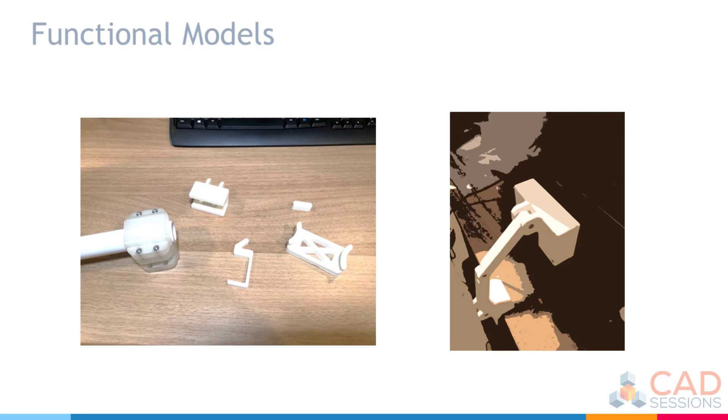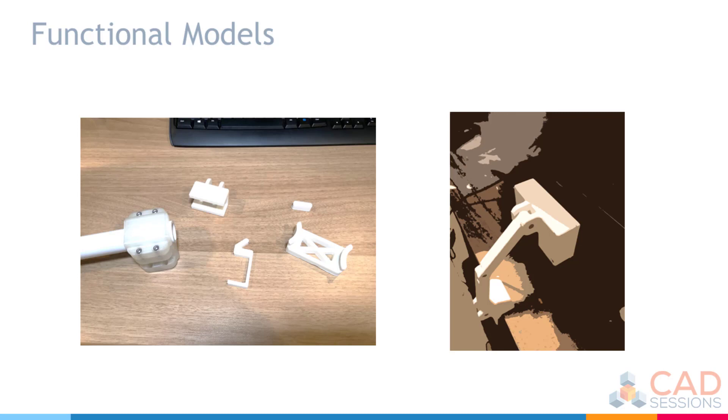It all starts with sizing up your application and being able to take accurate measurements of what your 3D design will be interacting with. So in the example of the coaster, you'll need to measure the largest cup or mug that you plan to use the coaster with and dimension your coaster accordingly.